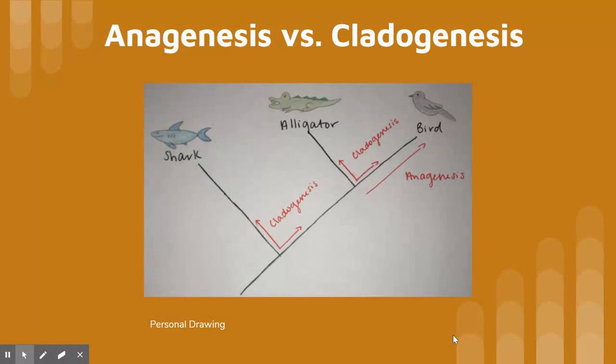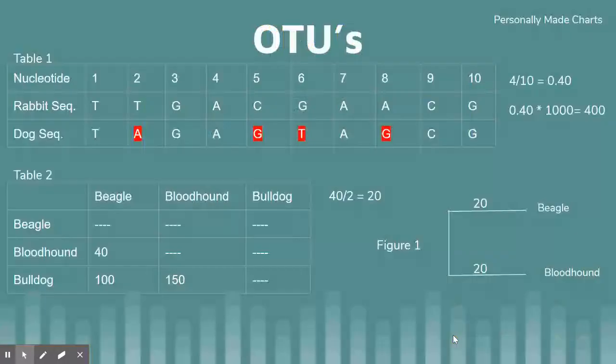Cladogenesis is splitting of one lineage into two. There are two examples of this in this diagram. It is observed where the shark branches off and again where the alligator branches off.